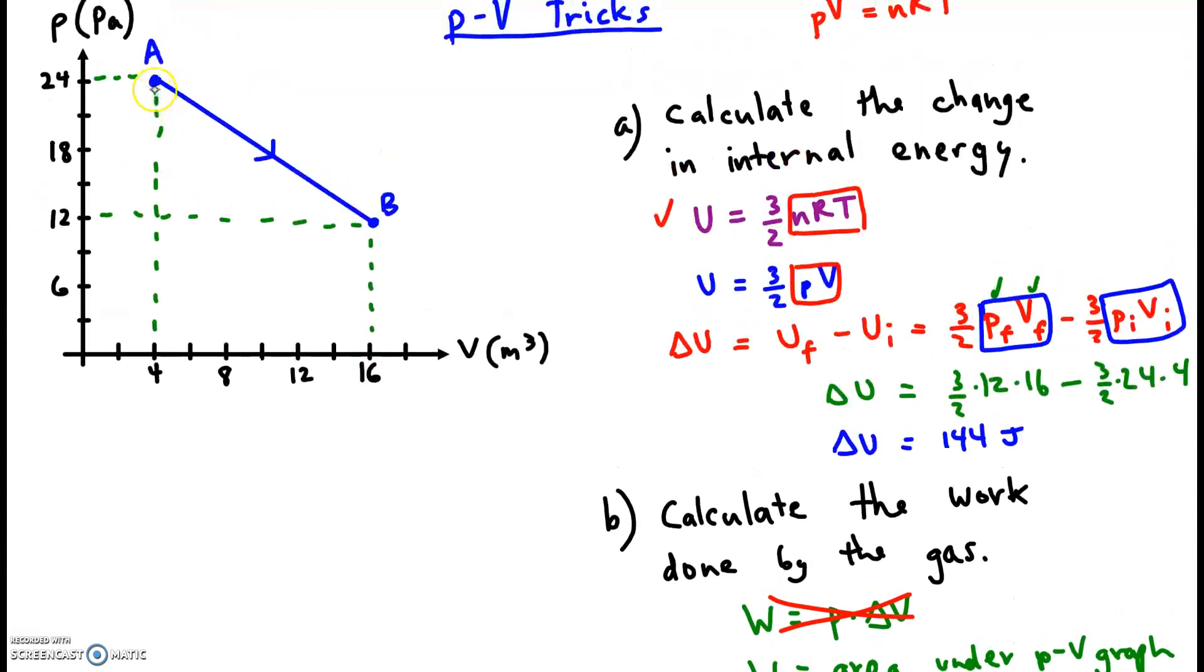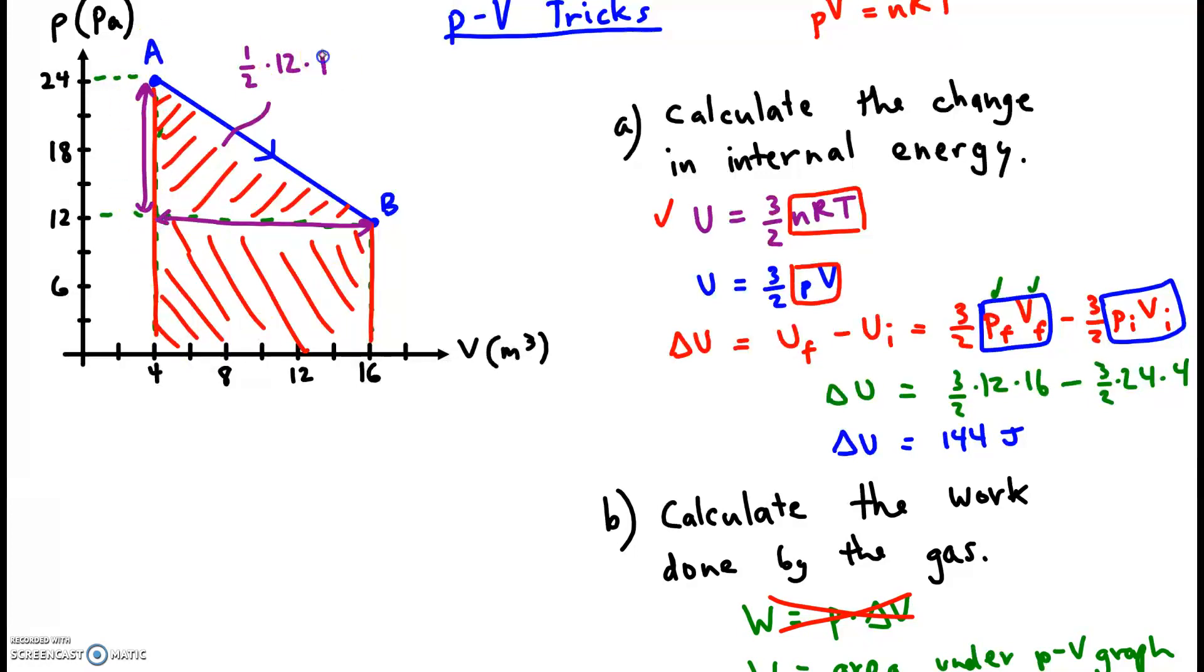All right, well, if I look at the area, it's this area from the line down to the x-axis. Go all the way down to the x-axis. I'm going to break it into a triangle whose area is 1/2 times the base, which goes from 4 to 16, times the height, which goes from 12 to 24. This is 12 times 6. Then I do the same thing for the rectangle below. There's no 1/2 here because it's a rectangle. The base is just from 4 to 16, and the height is from 0 to 12.